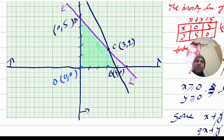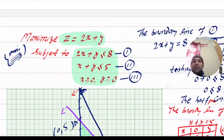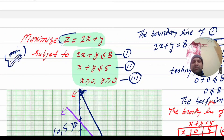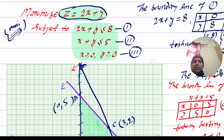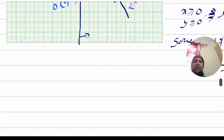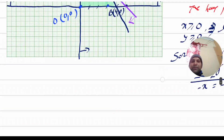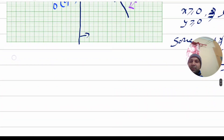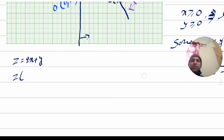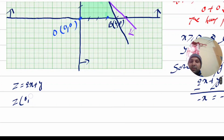Now we can see the corner points and evaluate the objective function. Z is equal to 2x plus y. We evaluate Z at each corner point: starting with (0, 0), then (4, 0), (3, 2), and (0, 5) to find the maximum value.